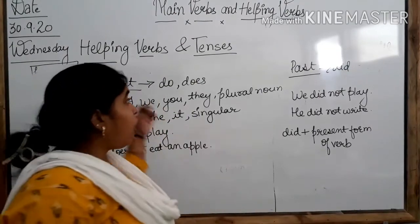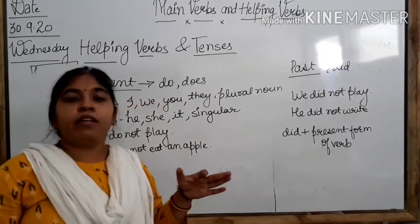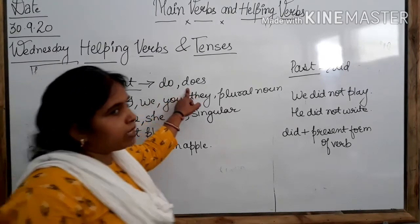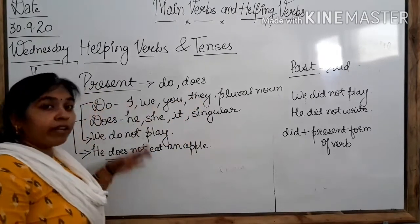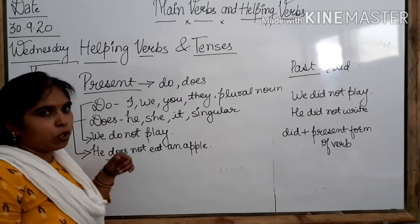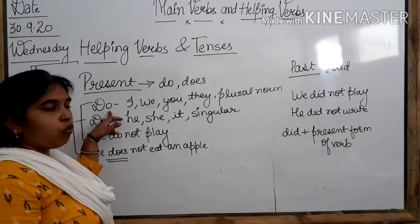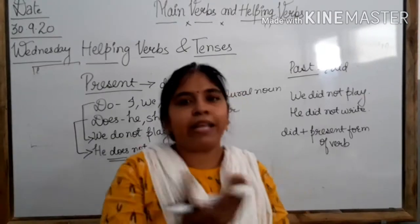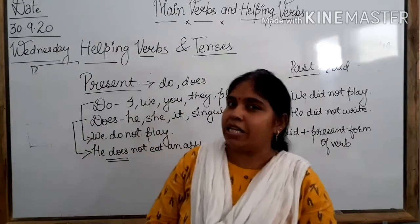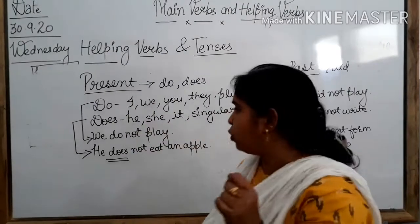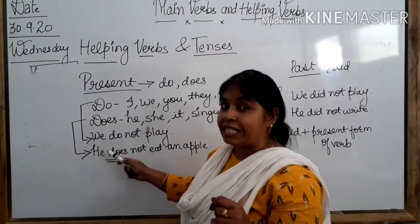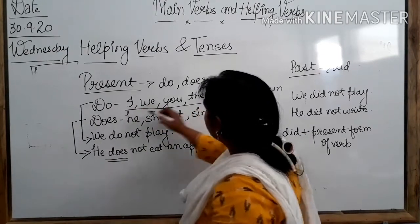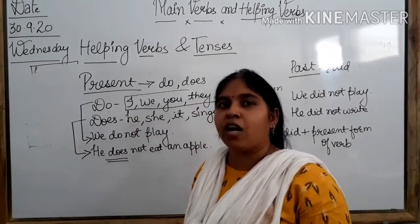We have more helping verbs for present and past — 'do' and 'does.' These helping verbs we use in present tense. With 'do,' we use I, we, you, they, and plural noun. When too many nouns are there — plural means many in number — we use the 'do' helping verb to make a sentence of present tense. For example: 'We do not fail.' 'We' belongs to this group, that's why we use 'do.'